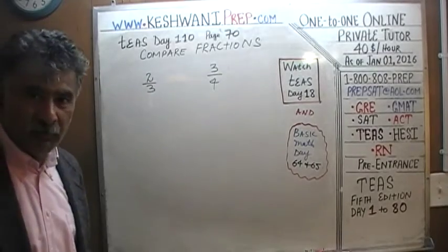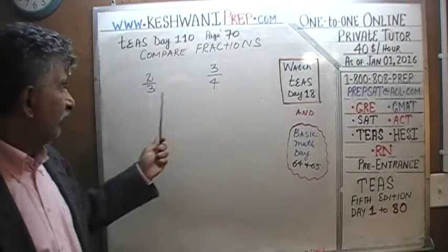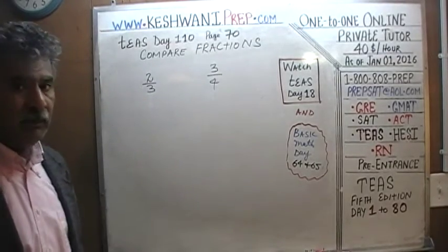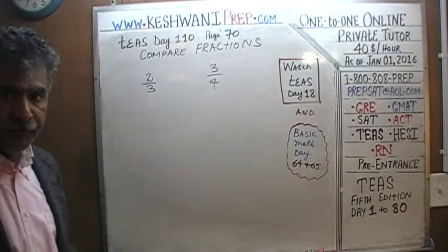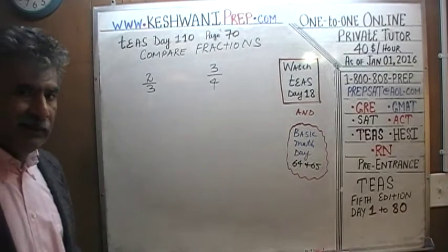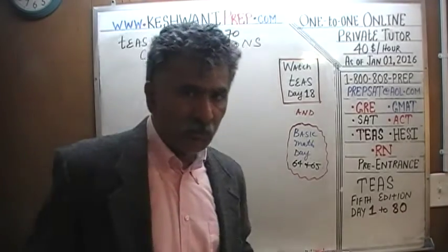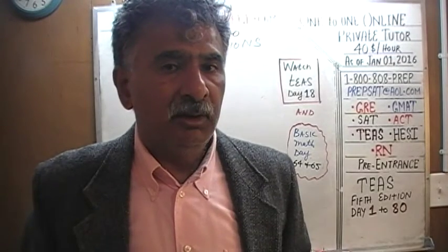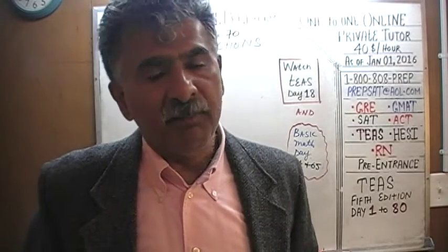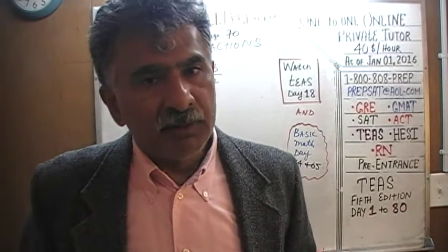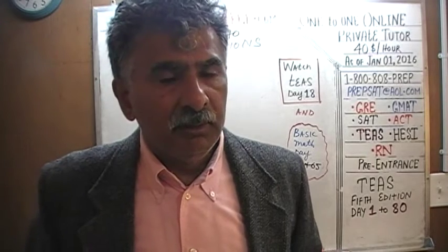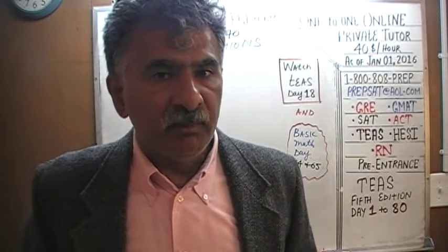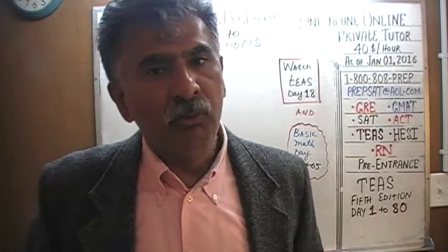Obviously 0.75 is more than 0.66, but let's assume we didn't know that. The easiest, quickest, most efficient way of comparing two fractions is to make sure they have the same denominator. If the denominator is the same, it ceases to play any role — all we have to do is compare the numerators.